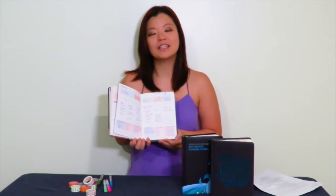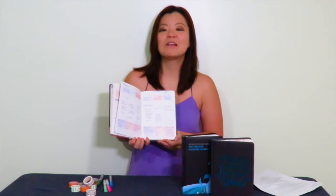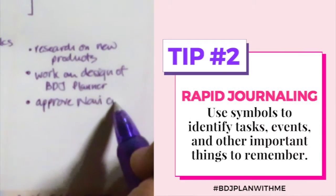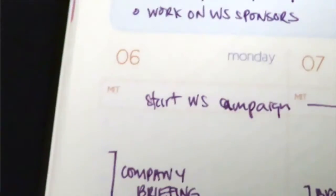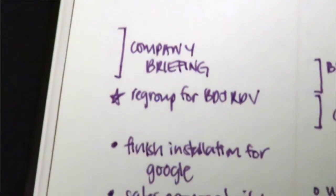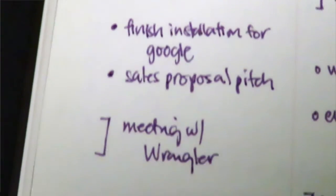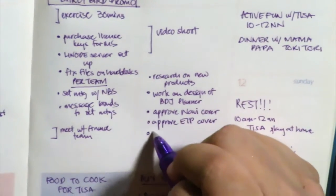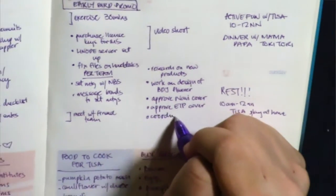Tip number two is using bullets or doing rapid journaling. Rapid journaling is essentially using two to four words in one line — it's just a very short reminder of what the task or event is. You can use symbols to identify different things: a period for a task, a star for a work event, a heart for a social activity, and a question mark for an idea that popped in your head that you want to research later on.